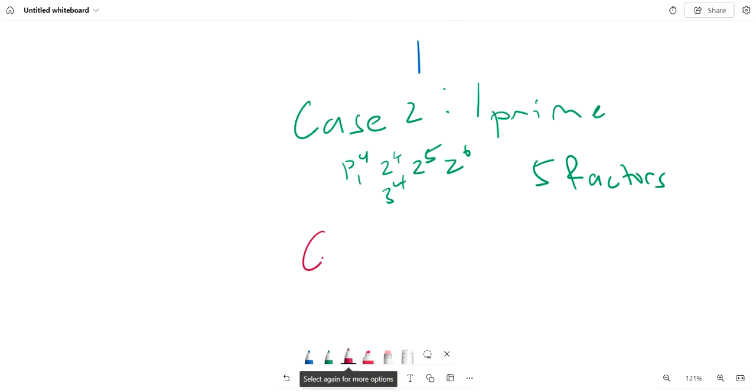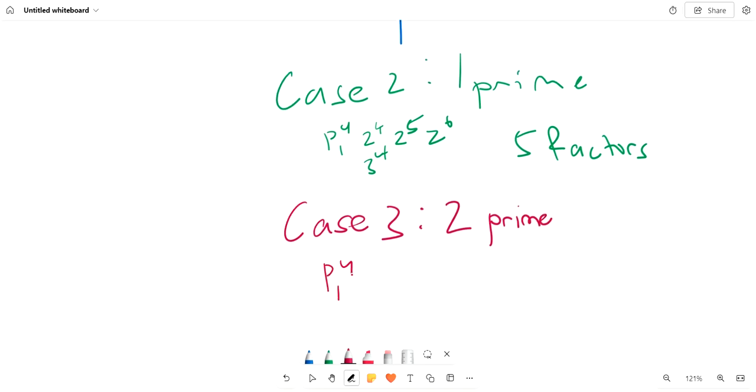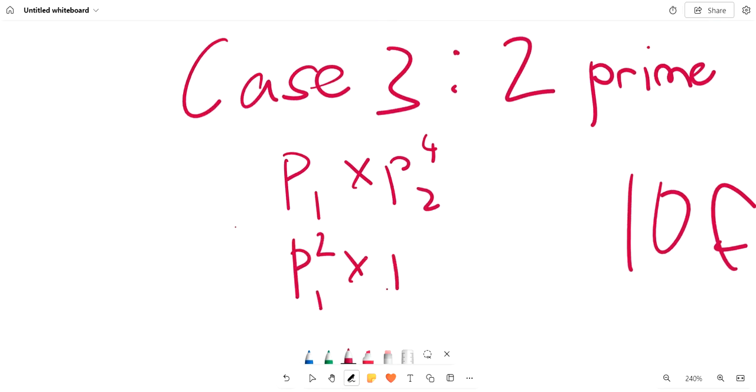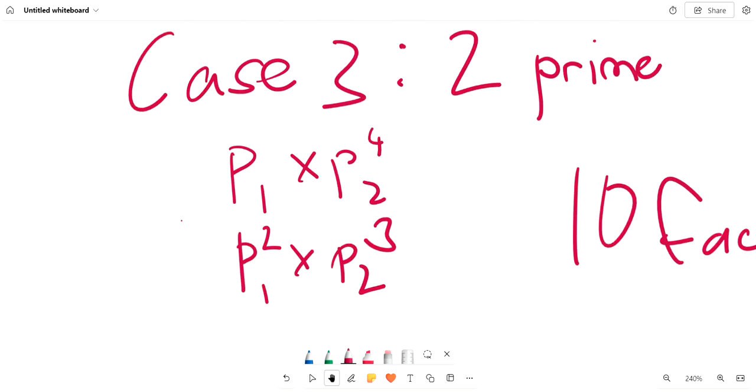Case 3: 2 primes. We have 10 factors here instead of 5 because we have 2 primes now. The possible forms are p1 times p2 to the 4th, or p1 squared times p2 cubed, and that's pretty much it.